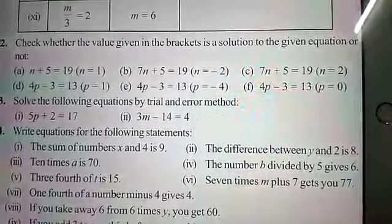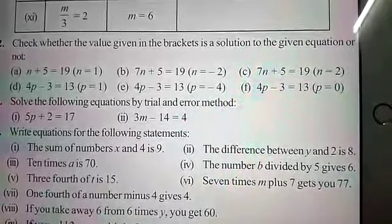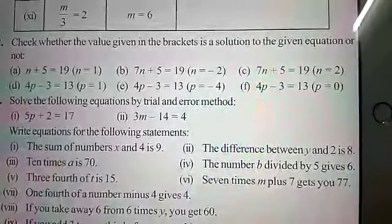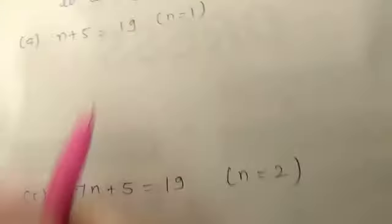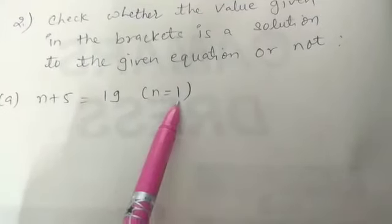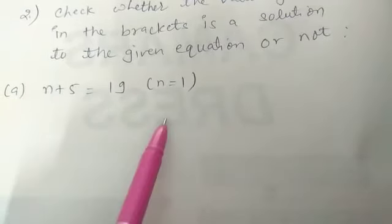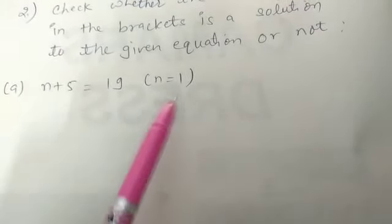Part A. n plus 5 is equal to 19. In bracket, n equal to 1. Now, here we have to check that n equal to 1 is a solution of the equation or not. So, what we have to do?